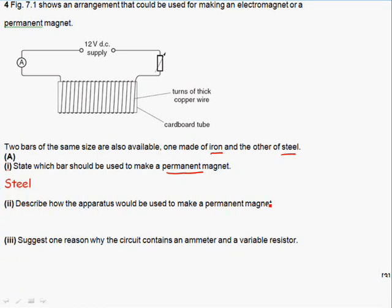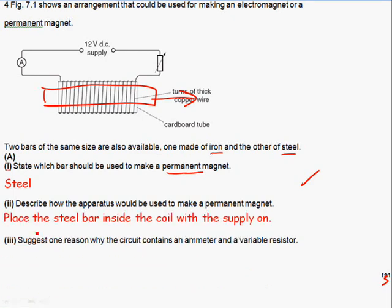Describe how the apparatus would be used to make a permanent magnet. If you just place the piece of steel inside the coil, and you can put the current on, and you can take the steel out slowly, by the time it comes out it should be magnetized. The magnetic domains within it will be aligned with the field. Since there are only three marks available for this question, one mark for each part, you don't really need to write too much.